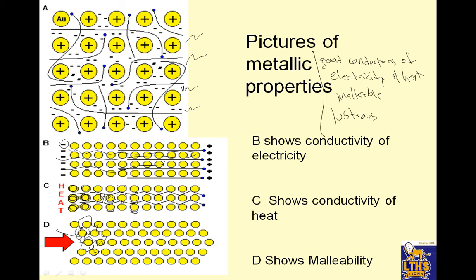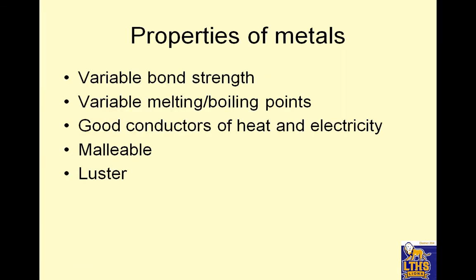So there are the properties of metals. Let's list them out: variable bond strength, which means variable melting and boiling points; good conductors of heat and electricity; malleable; and lustrous. Those are the only ones you should need to note.